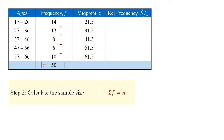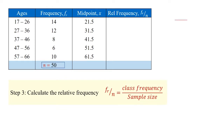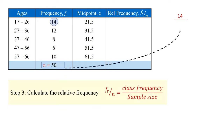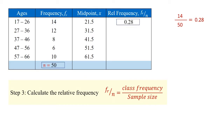To determine the relative frequency, we take the first group, 14, and divide it by the sample size. 14 divided by 50 is equal to 0.28. In other words, 28% of the total group sample was between ages 17 and 26.